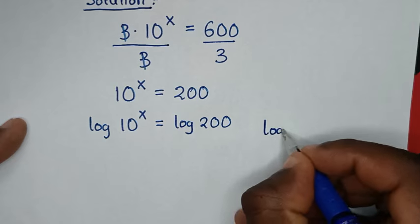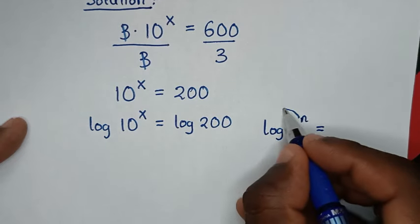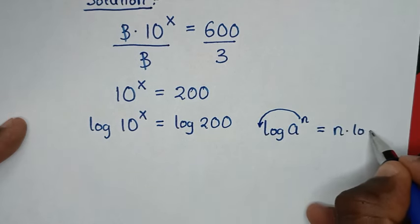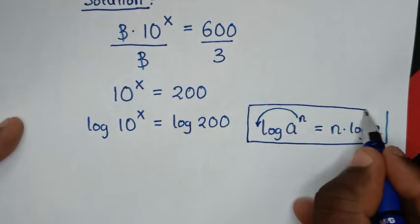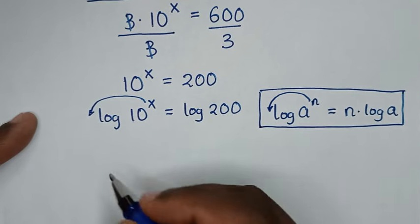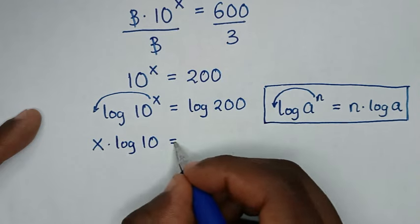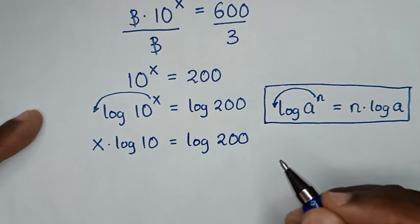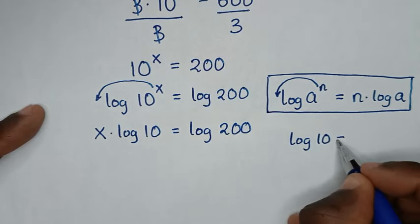Log of 10 power x is in the form of log of a power n, where the power n moves to the front. So it will be n times log of a. Here, x moves to the front, giving x times log of 10 is equal to log of 200. And log of 10 is equal to 1.